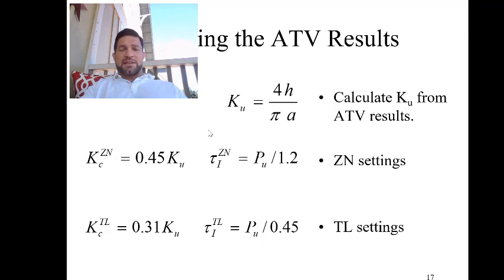So we establish the standing oscillations by changing the controller up and down. We get PU, the ultimate period. We can calculate the ultimate gain and use those to calculate the gain and the tau for the system.